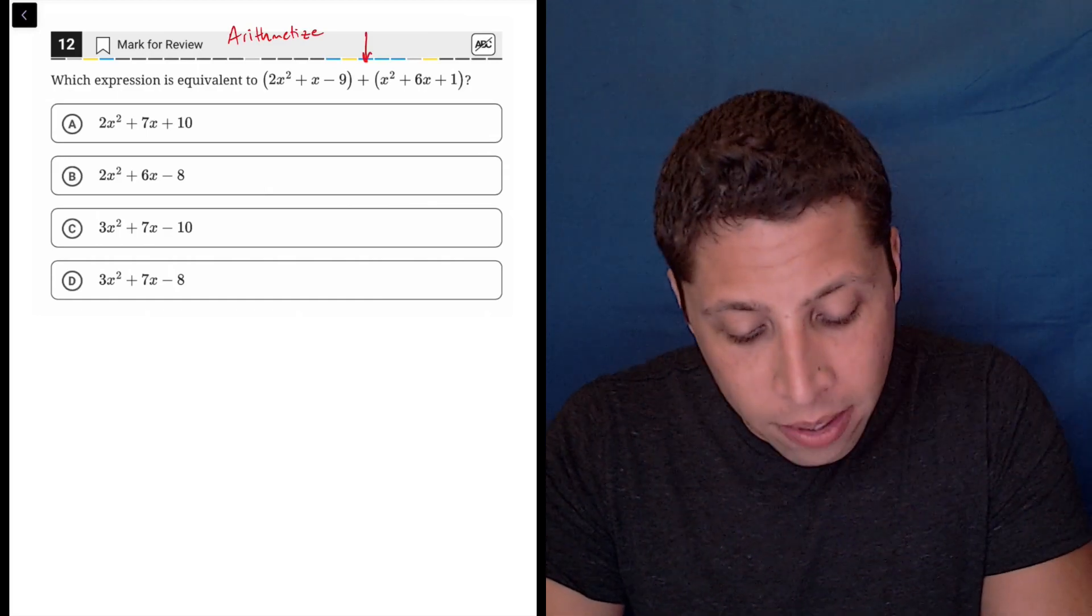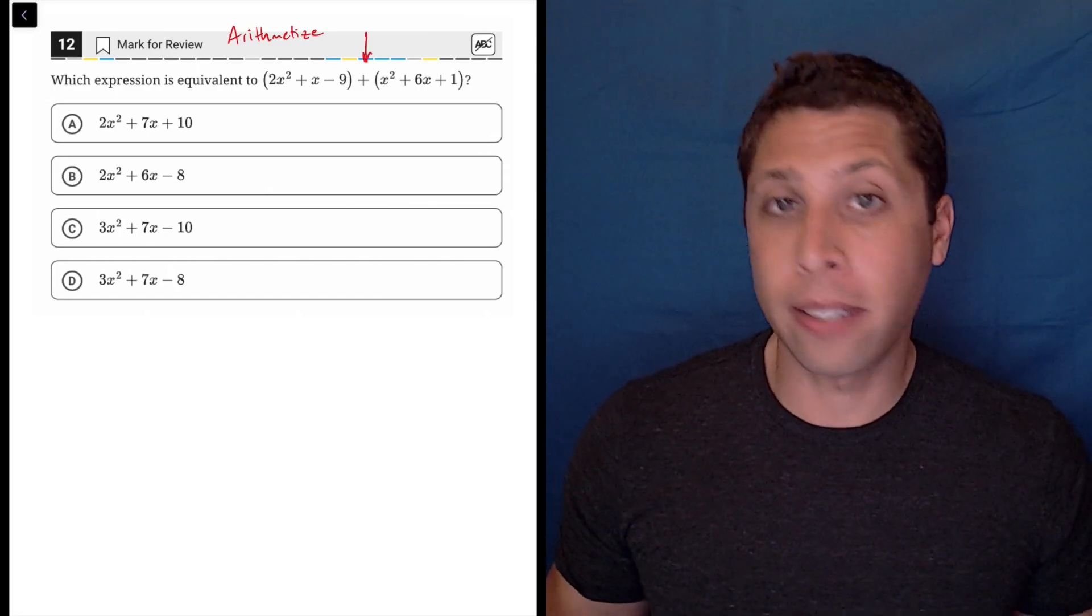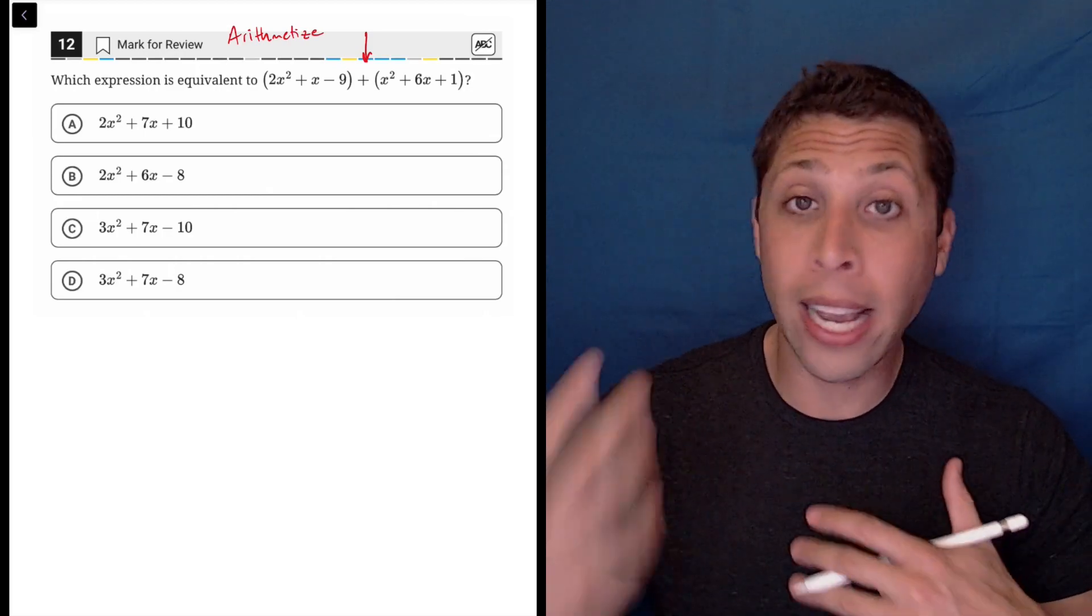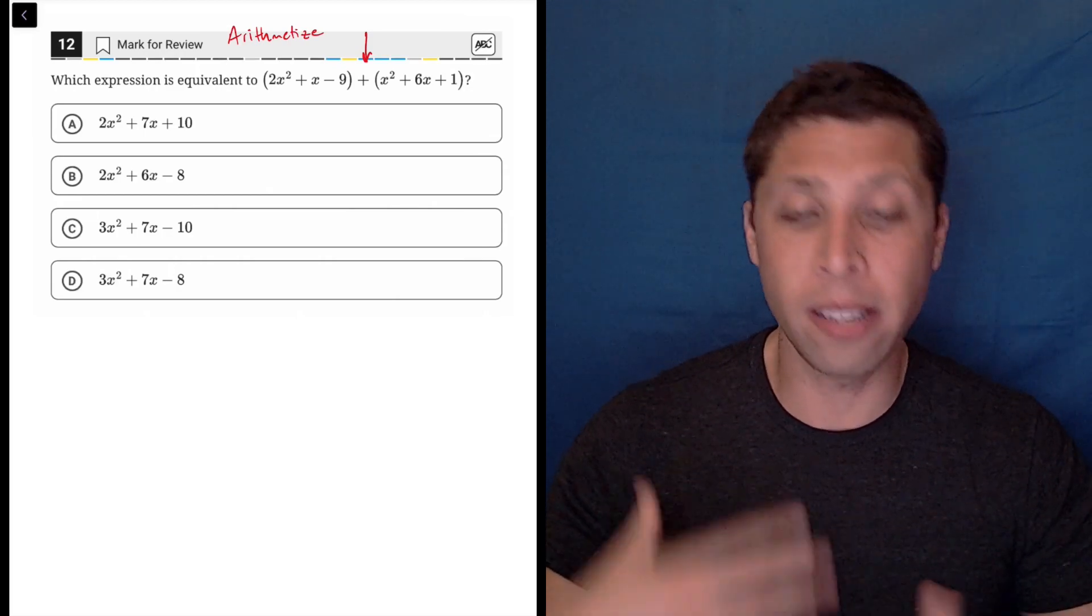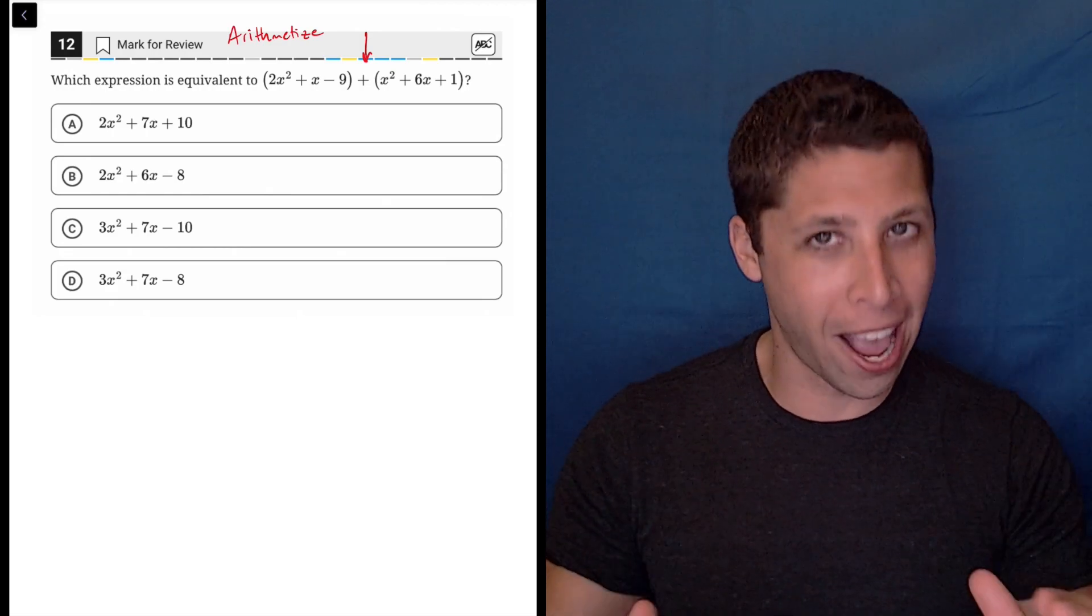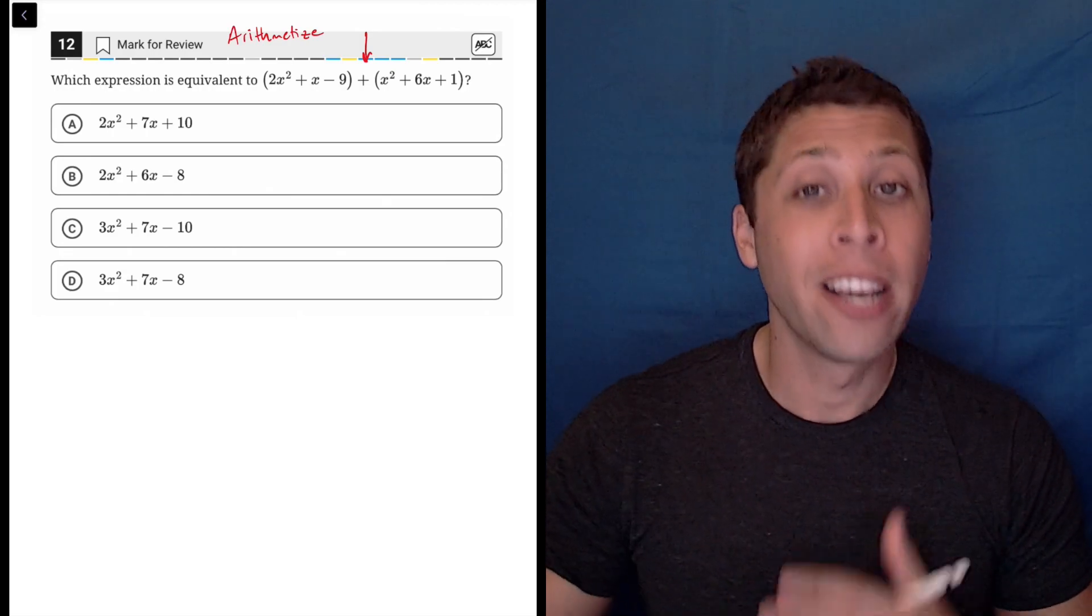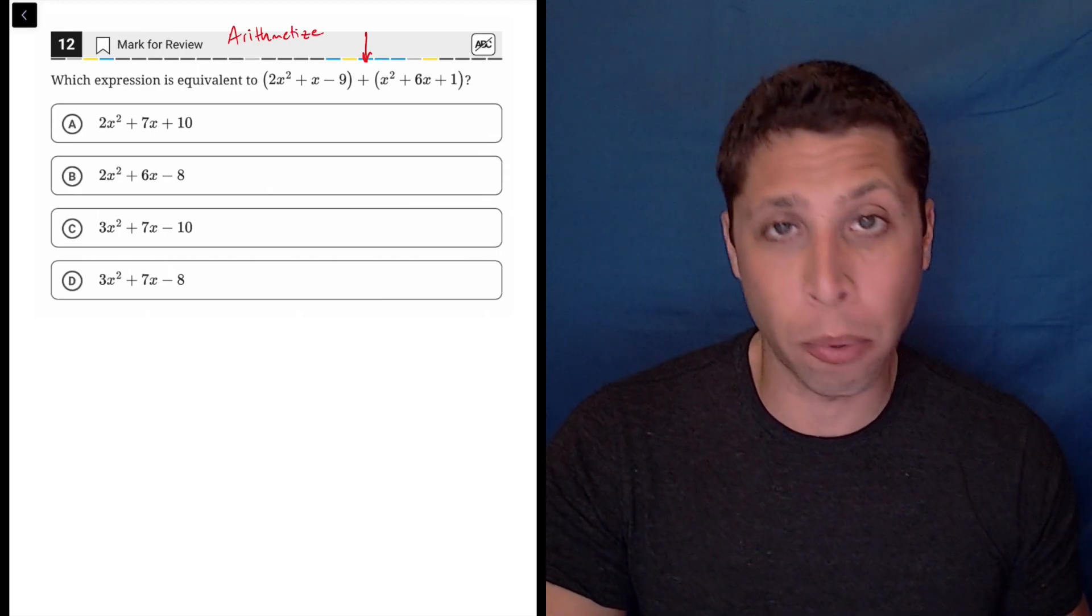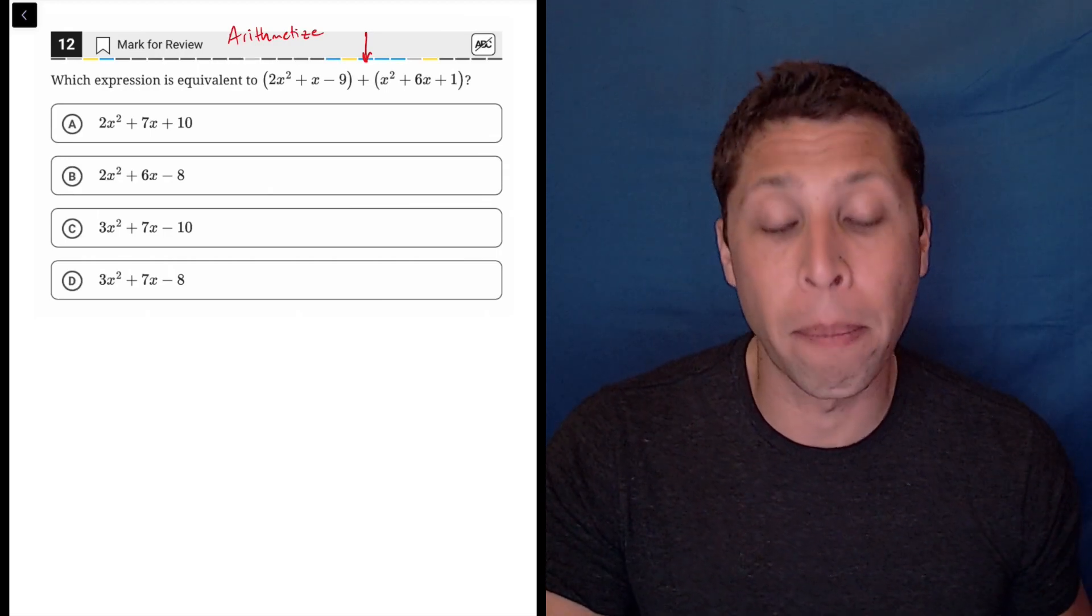Basically because this is a plus, these parentheses are irrelevant. They don't matter. If this were a negative, if this were a minus sign in between these, then we'd have to distribute that negative, and that adds complexity, and that might be why you might want to arithmetize on something like this. Because it's a plus, we can ignore the parentheses completely and just combine like terms.